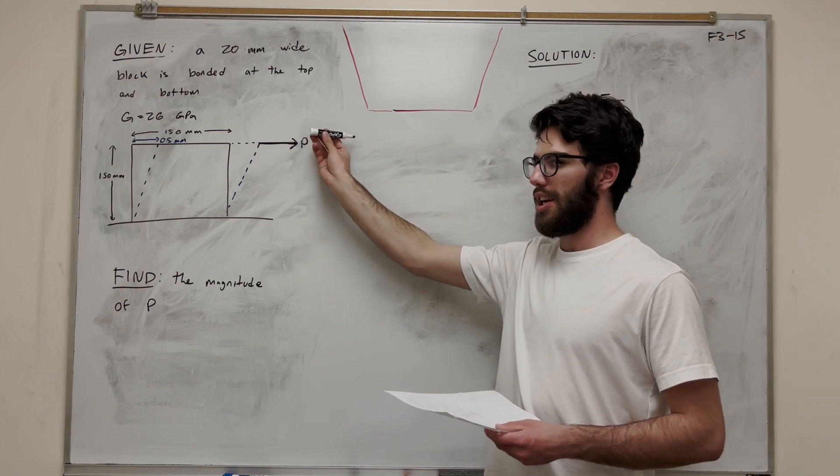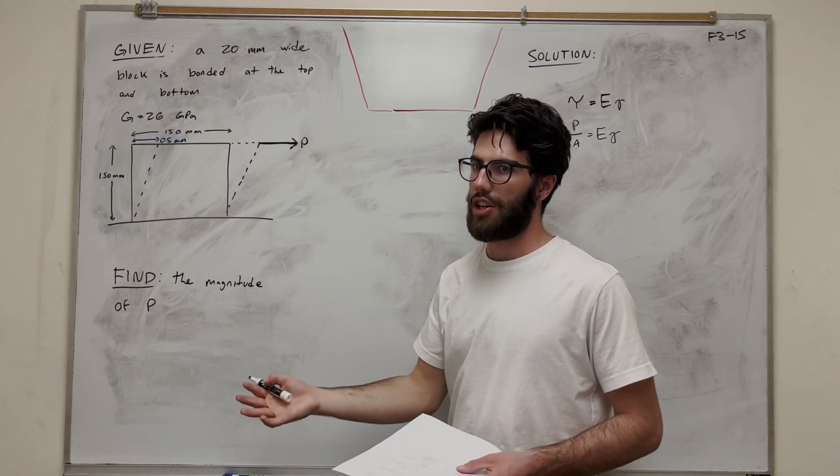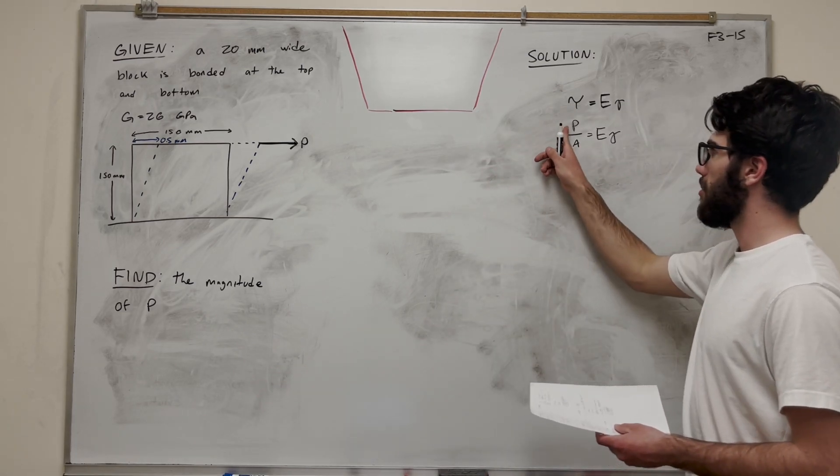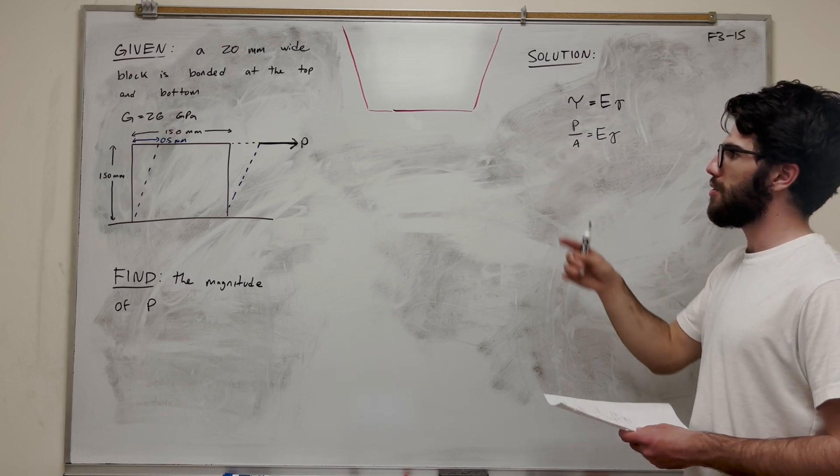Now, P is pulling at this angle here. If we look at the area in terms of this direction, it's going to be causing that shear stress. We know that our P here is going to be equal to that P there. This is what we're solving for.